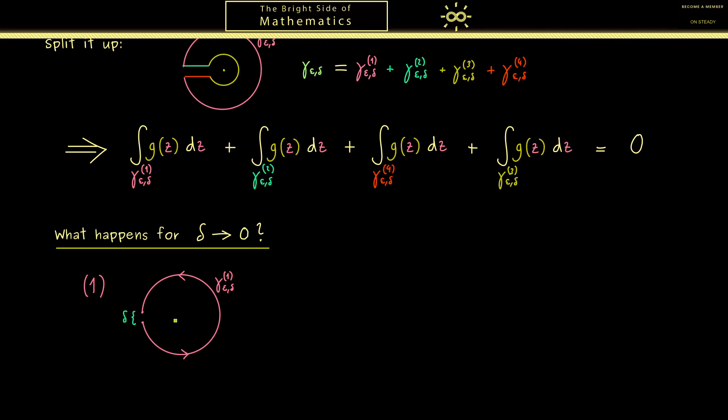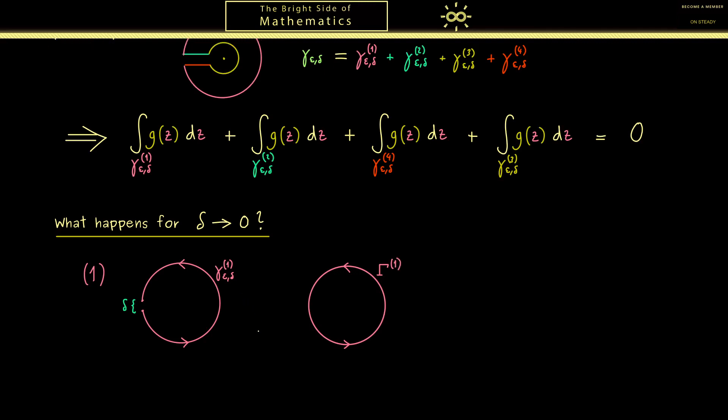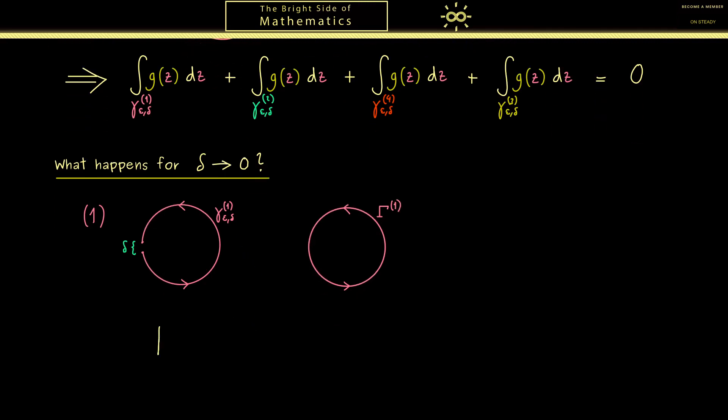In the next step, let's go with delta to 0 and see what happens to all integrals separately. Let's start with the first one, gamma 1. There you should immediately see, if we set delta to 0 we have the full circle. Therefore let's call this curve capital gamma with index 1. Then let's look at the difference between both contour integrals.